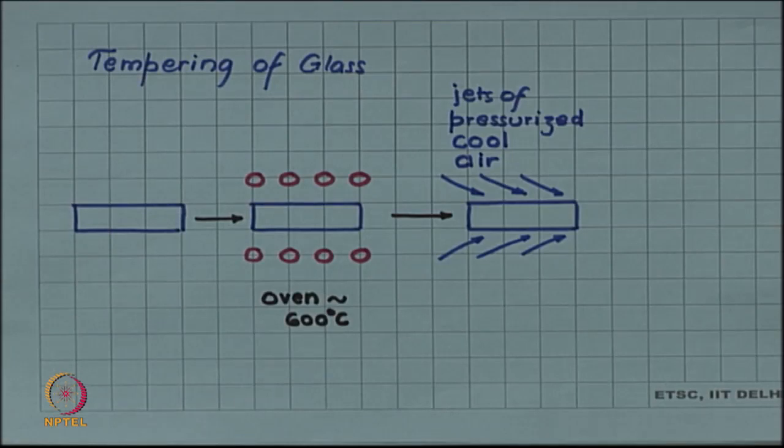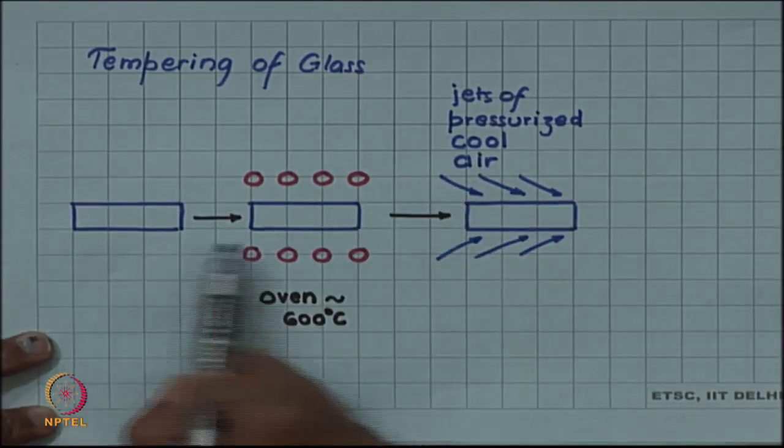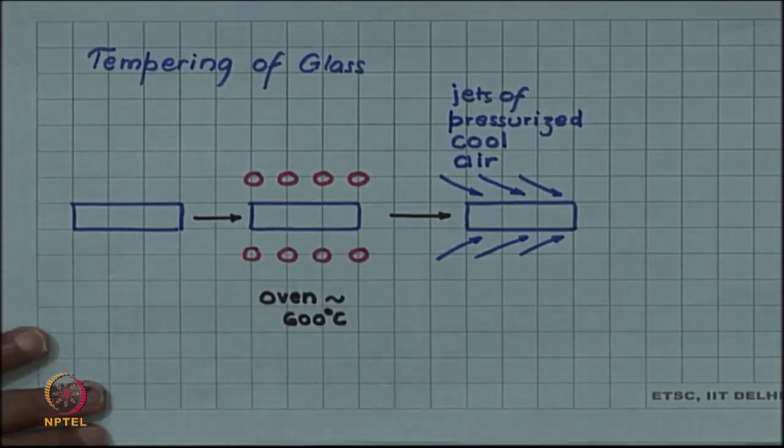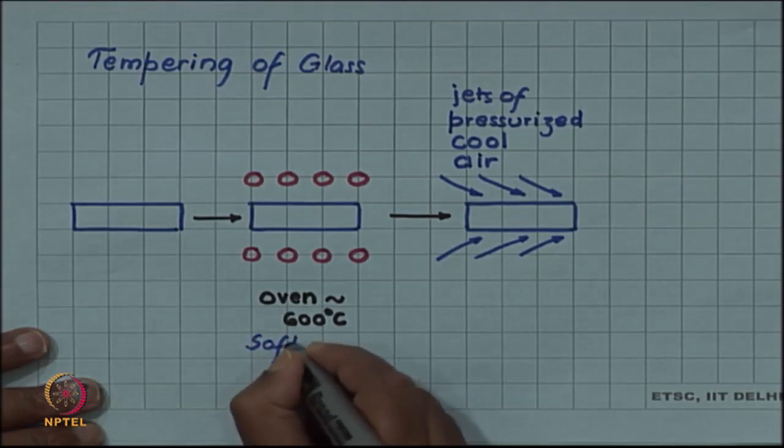Tempering of glass is a simple process in which the glass object is heated into a furnace up to 600 degrees Celsius. This is above the softening temperature.